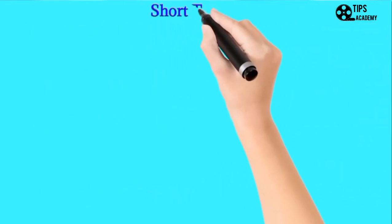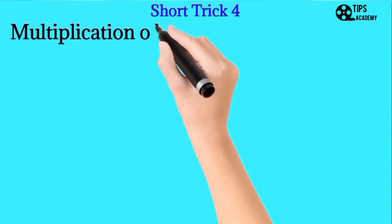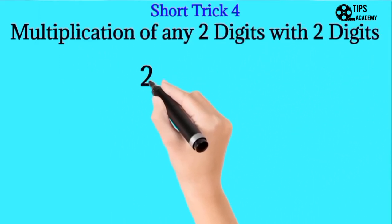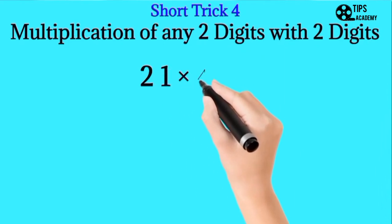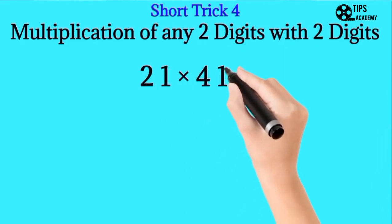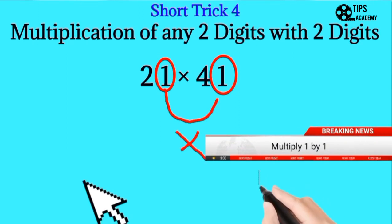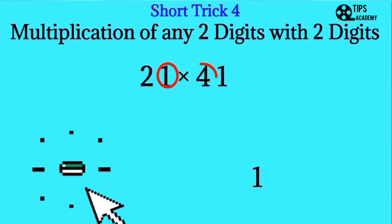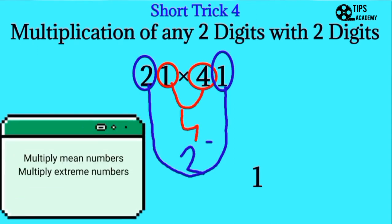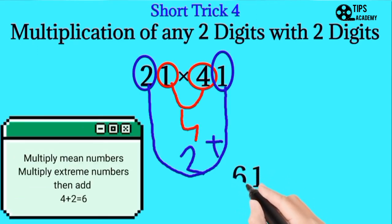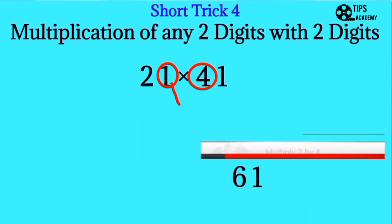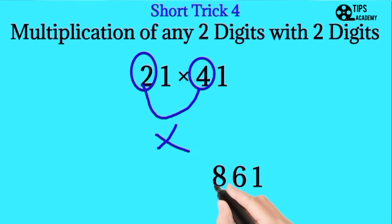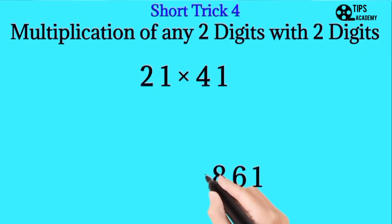Short trick number four: multiplication of any two digits with any other two digits. For example, we want to multiply 21 with 41. First we multiply the left elements of both numbers and write down. After that we multiply the middle and extreme elements and add them and write down. Finally we multiply the right elements of both numbers and write down. This will be the answer.